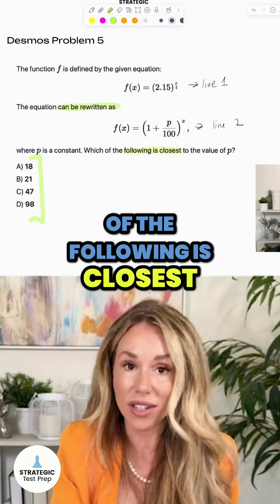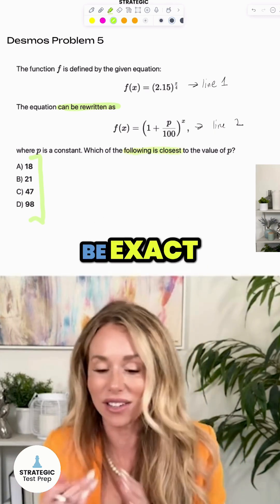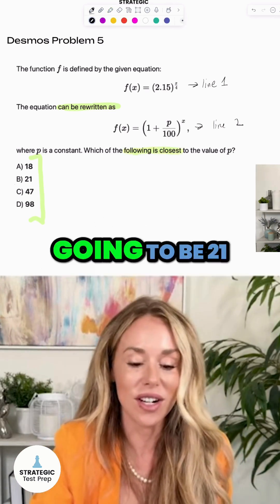Because I said, which of the following is closest? Look for that language. It doesn't need to be exact, it's an approximation. So our answer is going to be 21.